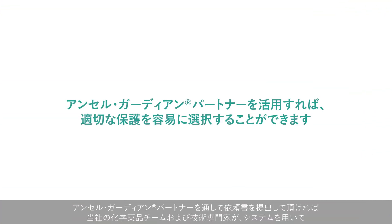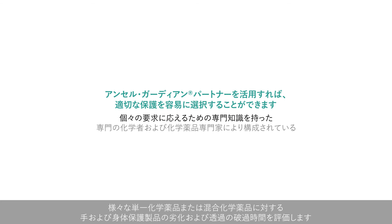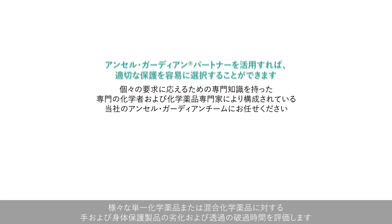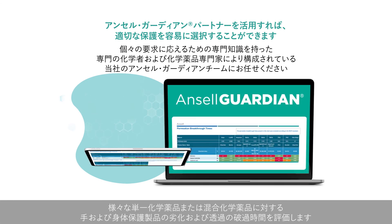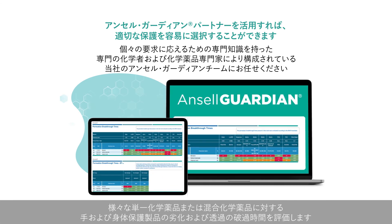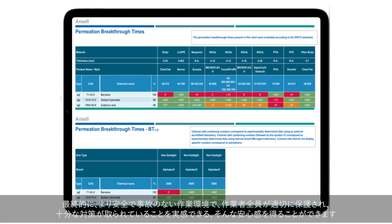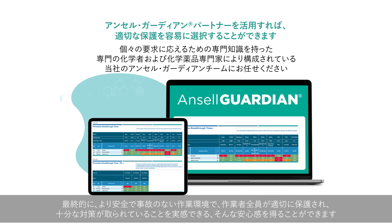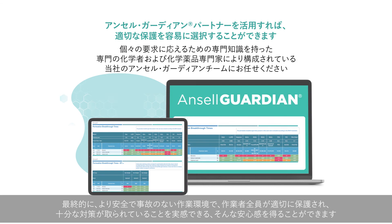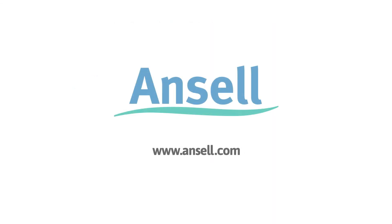By submitting requests via Ansell Guardian Partner, our team of chemists and technical experts behind the system can assess degradation and permeation breakthrough times for hand and body protection products versus various singles and chemical mixtures. Ultimately, you can be rest assured that all workers remain well protected and feel equipped in a safer, incident-free work environment.